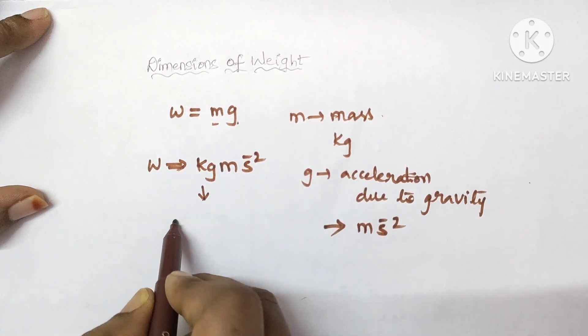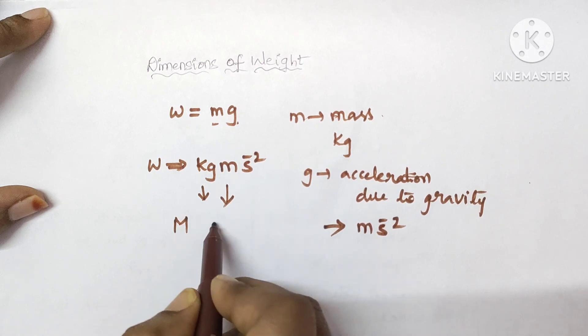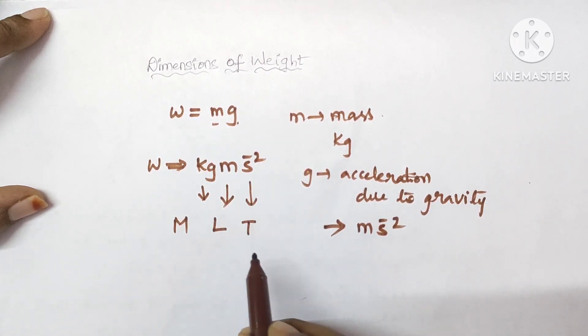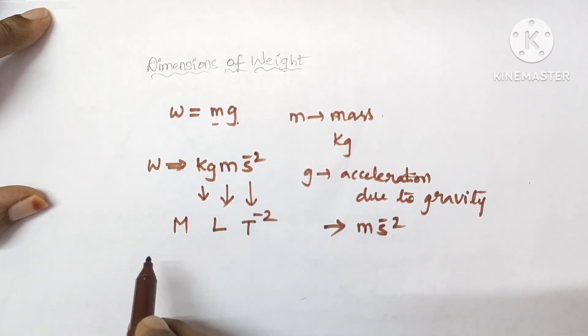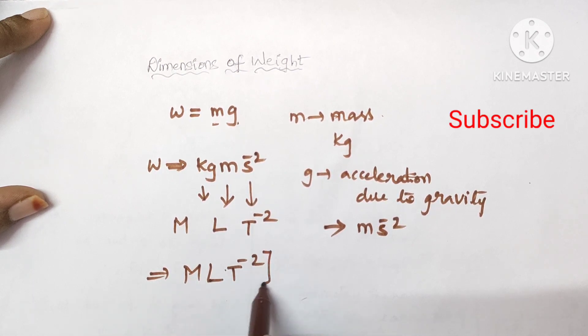Now, kg is expressed in terms of capital M and small m is expressed in terms of L and second is expressed in terms of capital T. So, S to the power of minus 2 is there, so here T power minus 2. Now, write again M L T power minus 2.